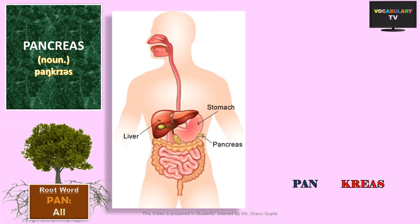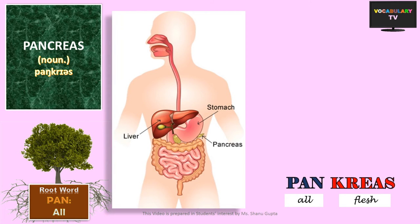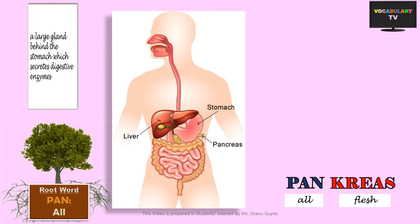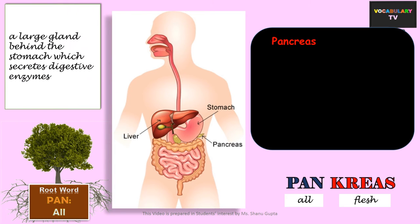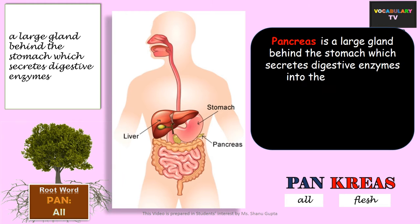The next word is an easy one: Pancreas, which literally means 'all flesh' and refers to a large gland made up of all flesh in vertebrates. The pancreas sits tucked behind the stomach and is known to aid digestion by secreting enzymes, and also helps regulate blood sugar.